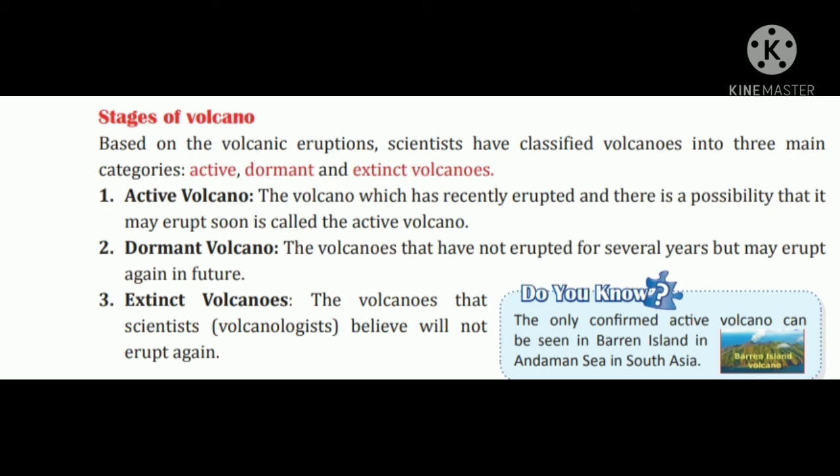Stages of Volcanoes. Based on volcanic eruptions, scientists have classified volcanoes into three main categories: Active, Dormant, and Extinct. Active volcano: the volcano which has recently erupted and there is a possibility that it may erupt soon is called the active volcano.